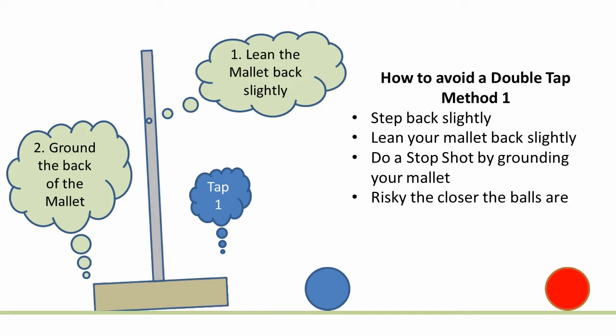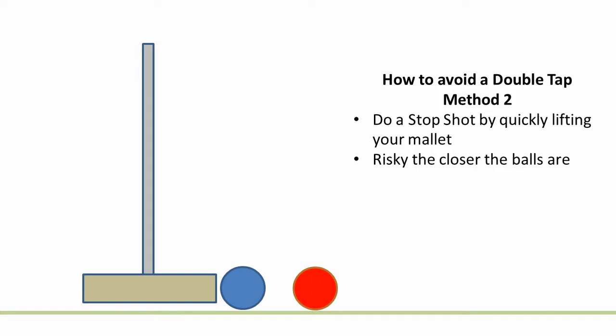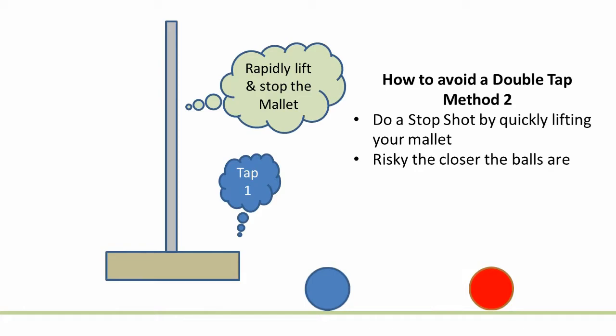Another stop or stun shot technique is to rapidly lift your mallet at the instant of striking. Both stop shot techniques are valuable and require practice to become proficient. Stop shots will generally not prevent a double tap if the balls are two inches or less apart.